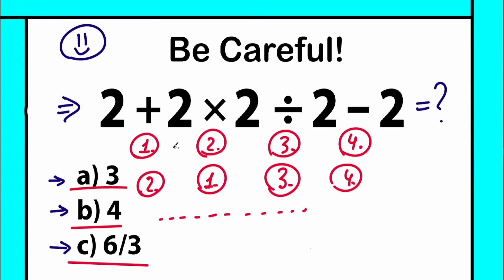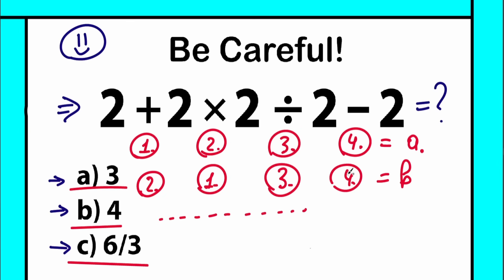For example, if we use addition first, then multiplication, division, subtraction, we get one answer — say, A. If we use a completely different order, we get a completely different answer — say, B. In math, it's not acceptable to say the correct answer is both A and B. We need to know the correct order of operations, the correct principles and algorithm, and this applies not just in math but across all areas of science.